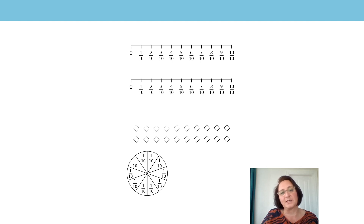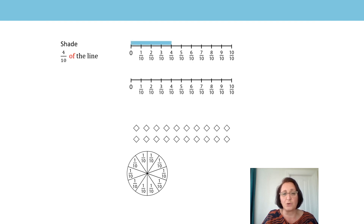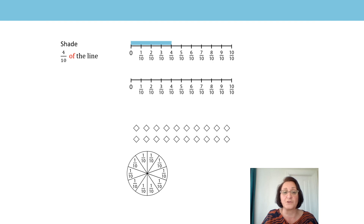On a number line, we can show that a fraction is a fraction of something. Four tenths is a fraction of the whole — that's shown on the number line because we are looking at four tenths as a fraction of ten tenths. You can see that we've covered one tenth, two tenths, three tenths, four tenths with our bar, but we've stopped at four tenths. That's okay if we're looking at fractions as a fraction of something.